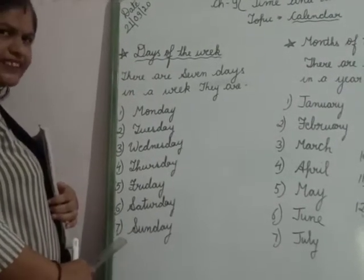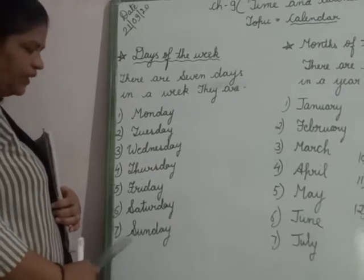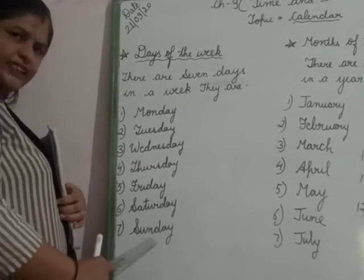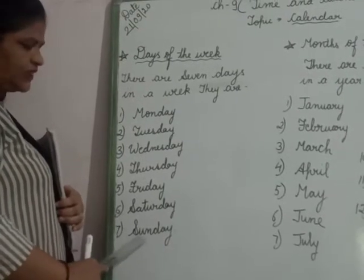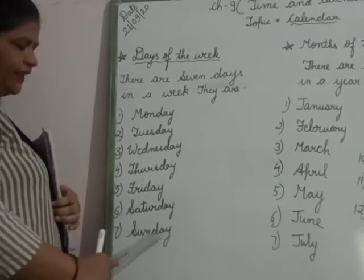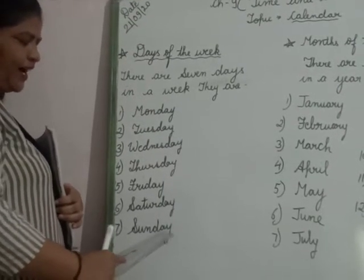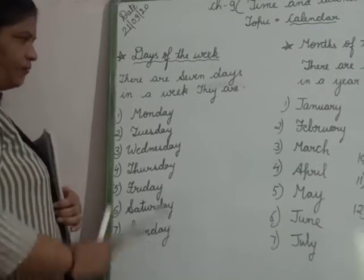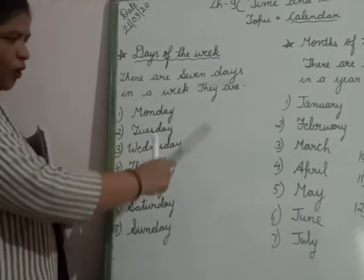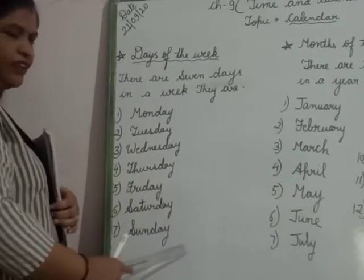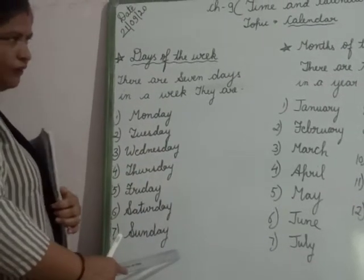6th day, Saturday, S-A-T-U-R-D-A-Y. Saturday. And the 7th day, that is the last day of the week, is Sunday, S-U-N-D-A-Y. Sunday. Now children, all these are the days of the week.